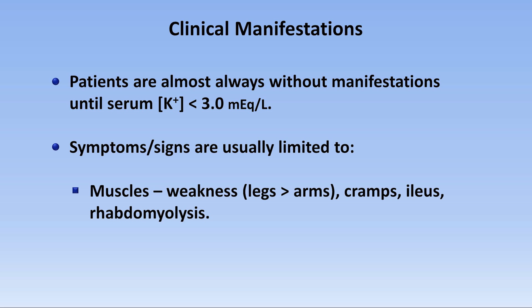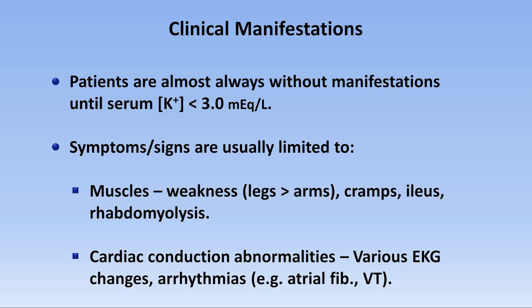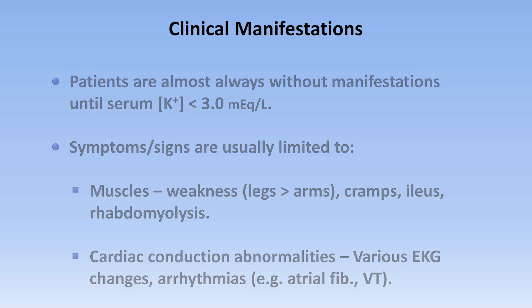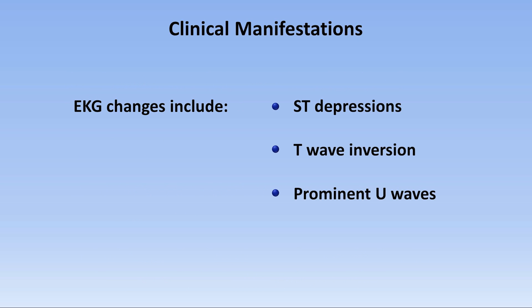The other affected organ system is the heart, specifically the conduction system. Patients can develop various EKG changes and arrhythmias. Afib is the most common hypokalemia-associated rhythm, but VT and torsade are definitely the most notable and feared. The specific EKG changes that can be seen are ST depressions, T-wave inversions, and prominent U-waves — the latter of which are an uncommonly present positive waveform that comes after the T-wave but before the subsequent P-wave.